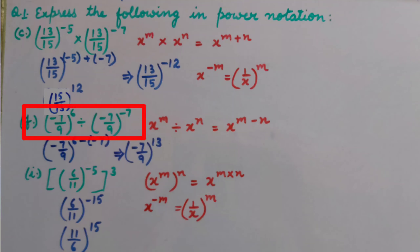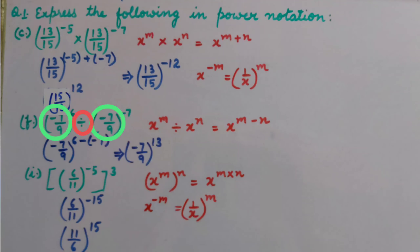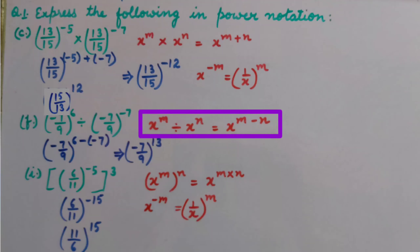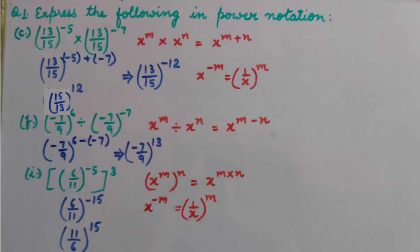Part F: minus 7 upon 9, whole raised to power 6, divided by minus 7 upon 9, whole raised to power minus 7. Again, we have division of same bases, so we use the law: x raised to power m divided by x raised to power n equals x raised to power m minus n. That gives us minus 7 upon 9, whole raised to power 13.